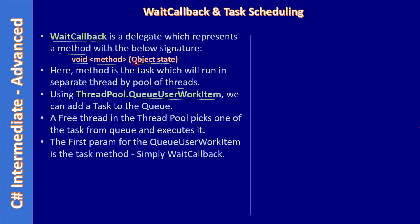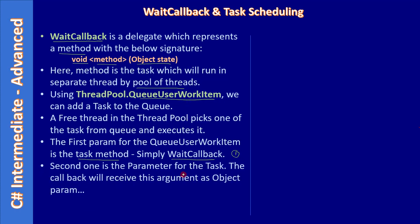The first parameter passed to QueueUserWorkItem is the task itself, or the task method. We can simply pass the WaitCallback delegate as the first parameter to this API. The second parameter is the input for the task, because the task method receives a parameter — the method will run in a separate thread and you are invoking it from a different thread.